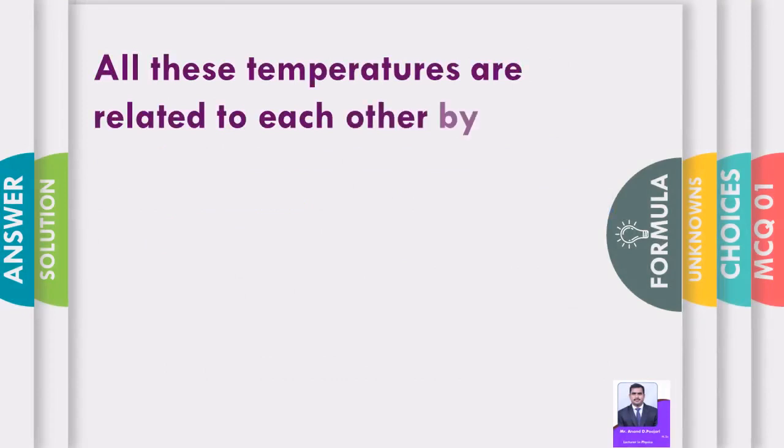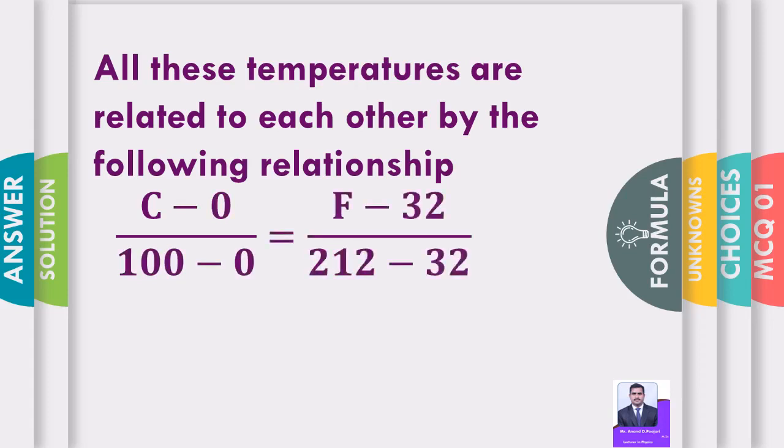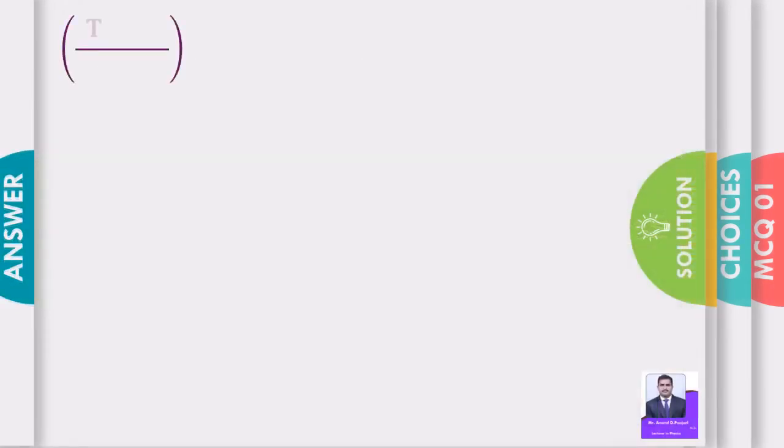All these temperatures are related to each other by the following relationship. C minus 0 by 100 minus 0 is equal to F minus 32 by 212 minus 32 is equal to K minus 273.15 divided by 373.15 minus 273.15 is equal to E is constant for all scales.